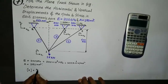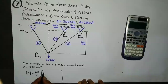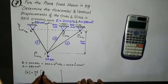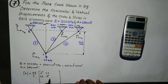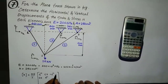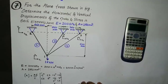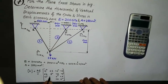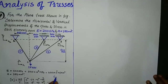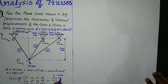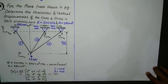The stiffness matrix for the truss element is AE/L, giving a 4×4 matrix. It is written in terms of c and s, where the diagonal terms are c², cs, cs, s², and the off-diagonal block is −c², −cs, −cs, −s². Here c represents cos θ and s represents sin θ.